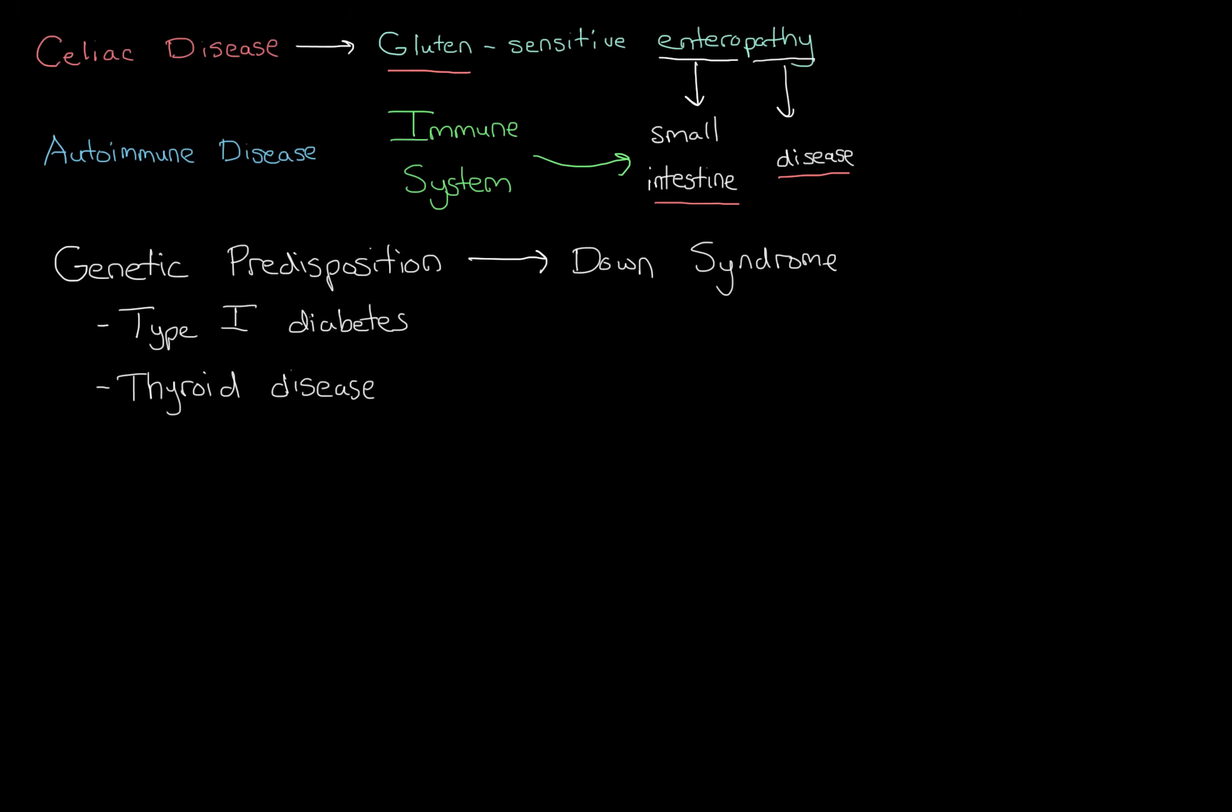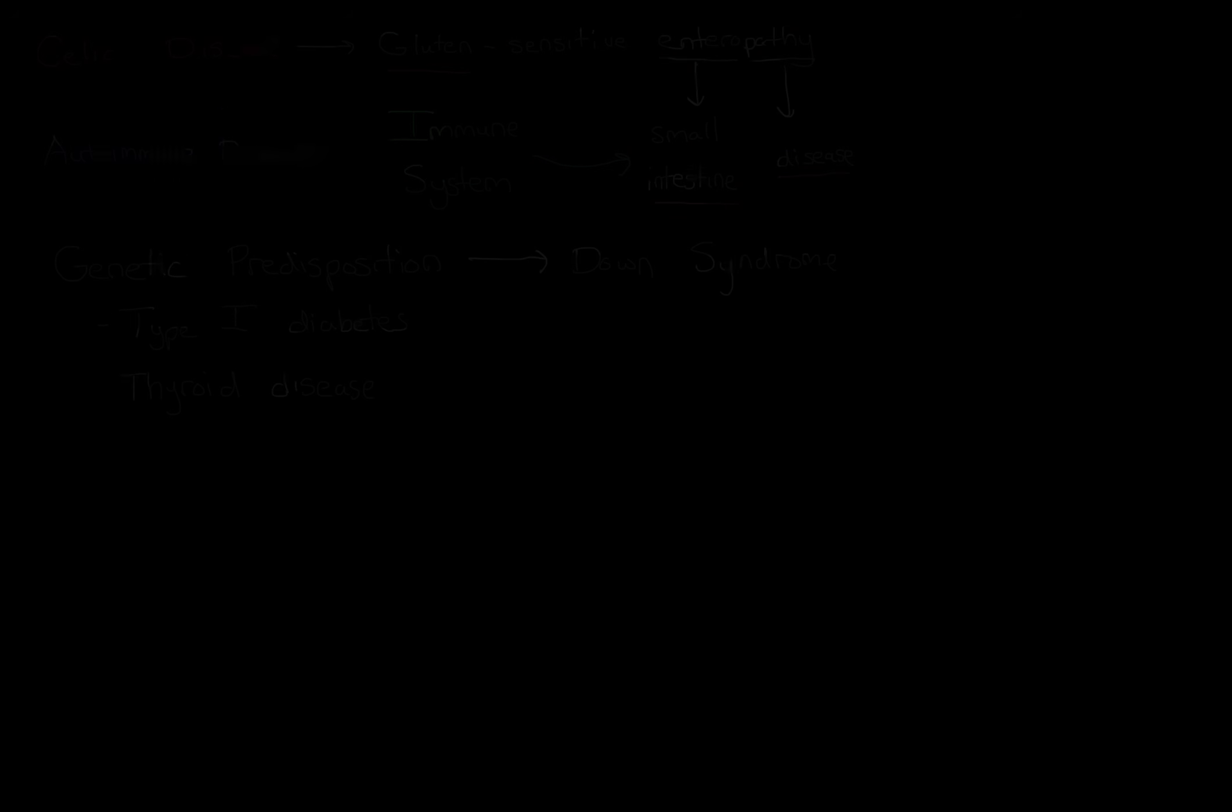Now even though we don't exactly know why the immune system is attacking the small intestine, we can still look at the pathophysiology and what's exactly going on in there. Remember that gluten is composed of two different proteins: gliadin and glutenin. We'll mostly focus on gliadin.